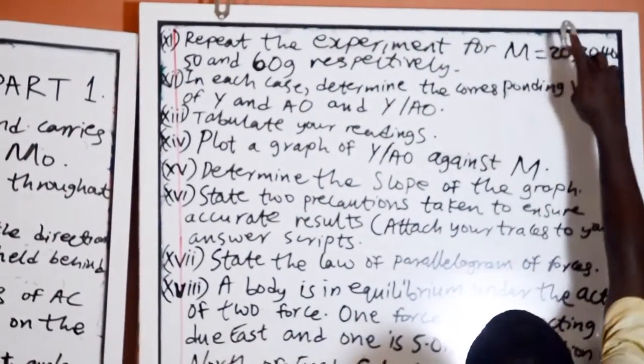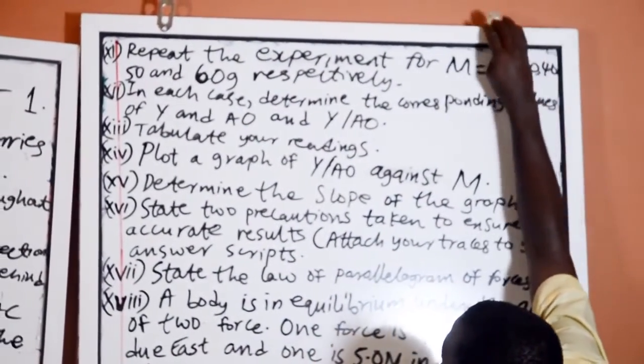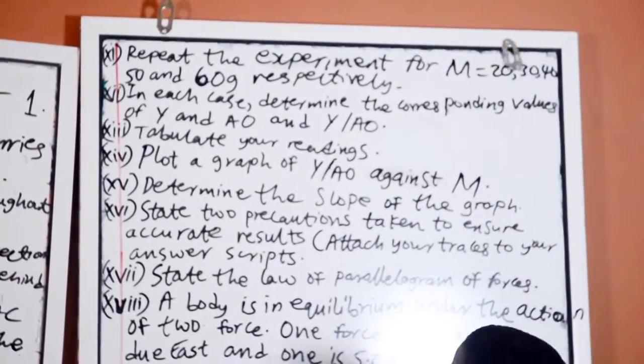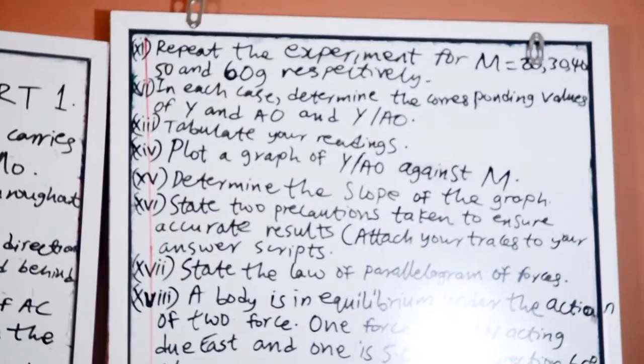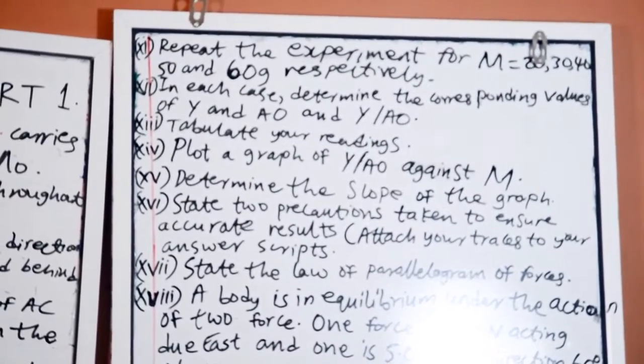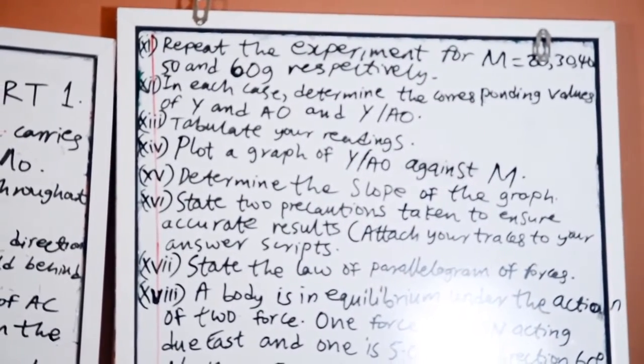30 grams, 40, 50 and 60 grams respectively. In each case, determine the corresponding values of Y and AO and Y over AO.